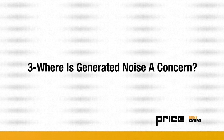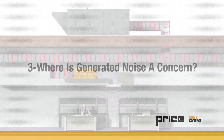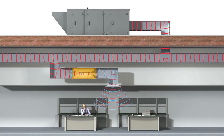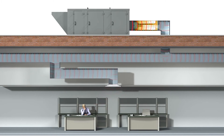So when is silencer generated noise a concern? Typically, generated noise is only an issue when the duct elements are in close proximity to occupants. Silencers should be positioned as close to the noise source as possible, which typically eliminates their generated noise impact on receiver spaces. Let's look at two examples to better understand how silencer generated noise contributes to overall noise levels.